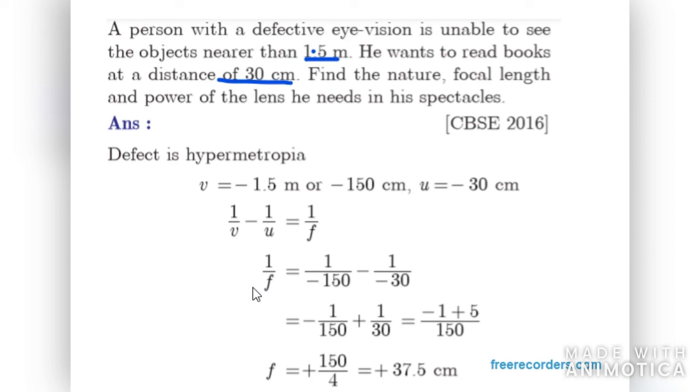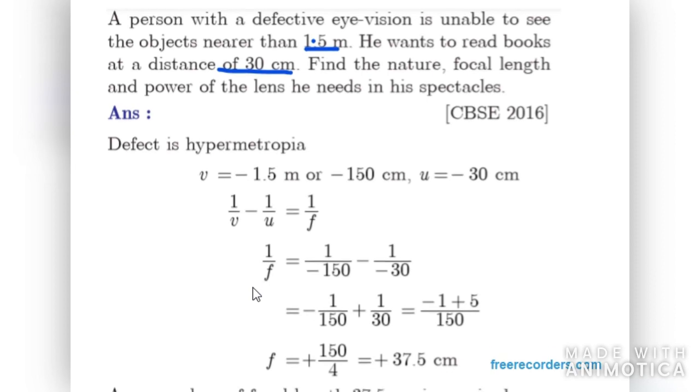We need to tell them which defect is this - it's hypermetropia. We need to tell them power of the lens. Power will be 1 over F, so 1 over 37.5 centimeters. Convert it into meters, it will be 2.67 diopter.